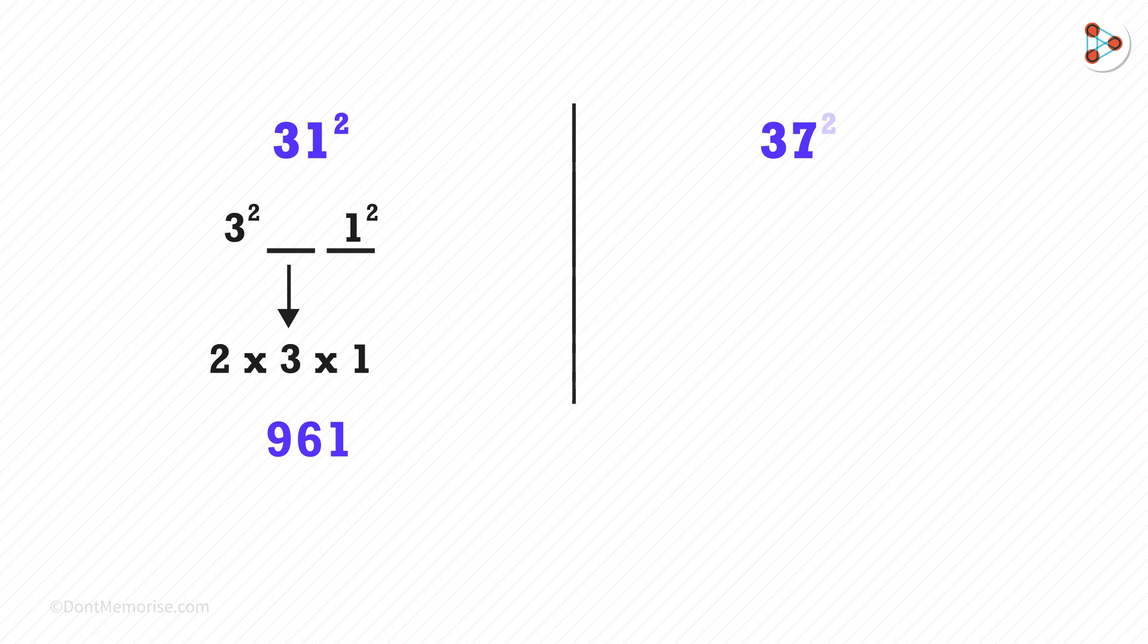Now, what will be the answer of 37 squared? On the left side, we will write 3 squared. In the middle, we will write 2 times 3 times 7. On the right side, we will write the square of the last digit, that is 7 squared.